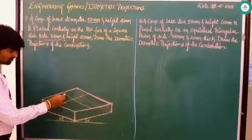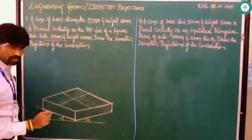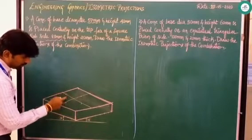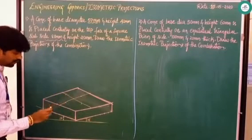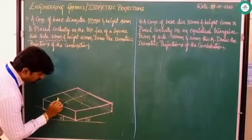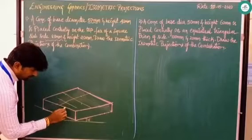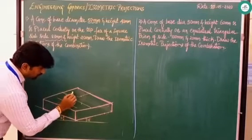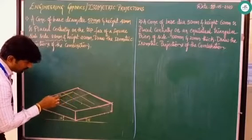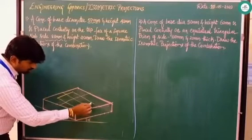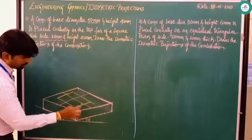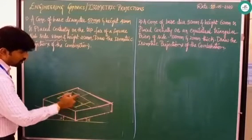After marking all these points, one thing you need to remember: please don't join the points randomly. When you draw a line passing through a point, ensure it is parallel to the 30-degree line. Similarly, the other lines should also be parallel to their respective 30-degree lines. After drawing this, the base part of the cone is complete.